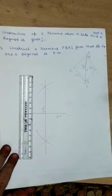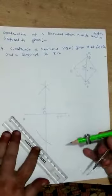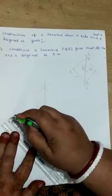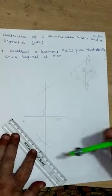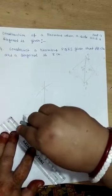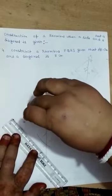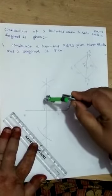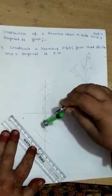Now, AB is 5 cm. That means AB. From A point, you make an arc like this, up and down. And from C point also, you make an arc like this.